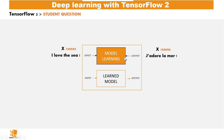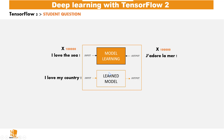Once we train the model on this very large dataset, we can then pass in an input like, for example, 'I love my country,' and the model will automatically output 'j'adore mon pays.'